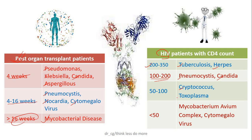Cryptococcus and Toxoplasma infections are common among patients with CD4 count between 50 to 100. But if the patient is severely immunocompromised, having CD4 count less than 50, cytomegalovirus and mycobacterium infections are very common.